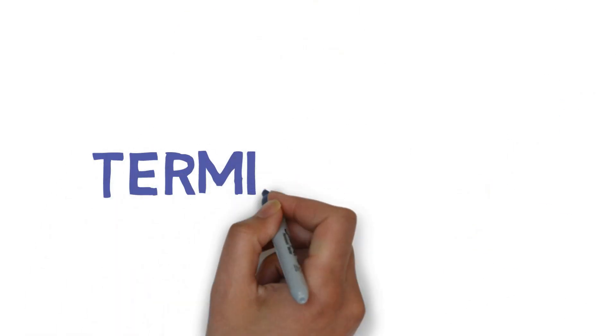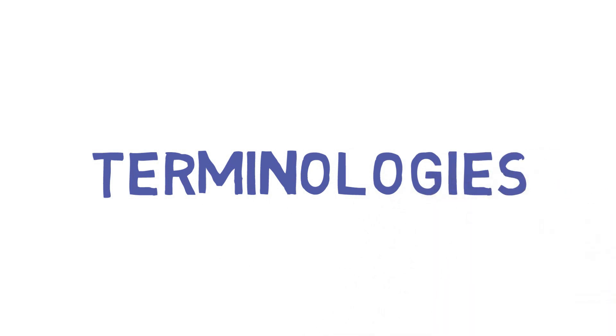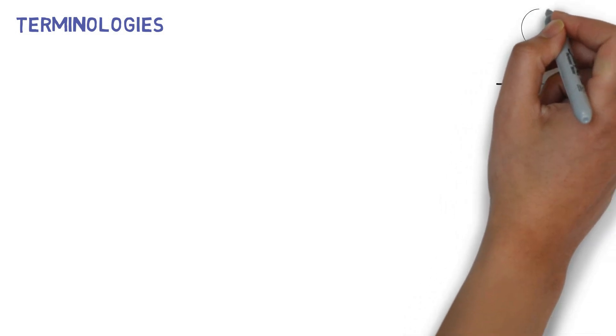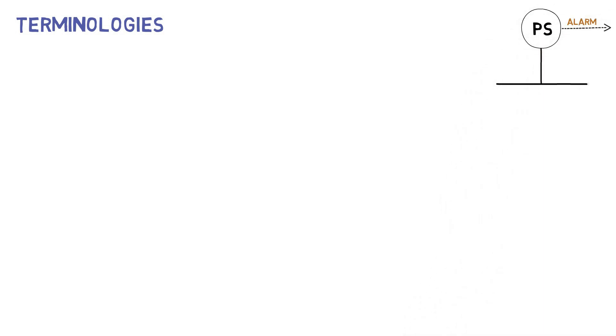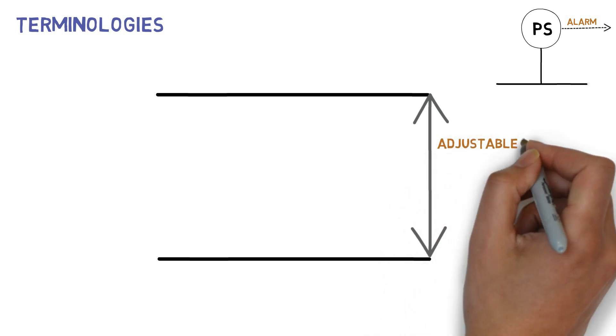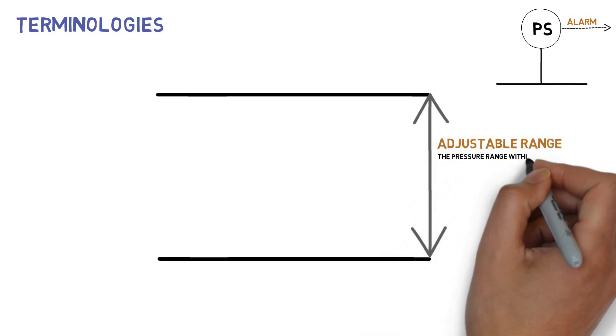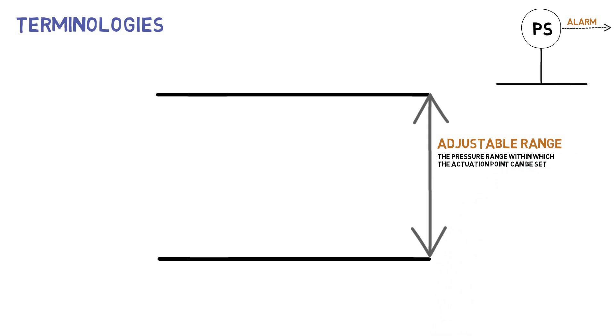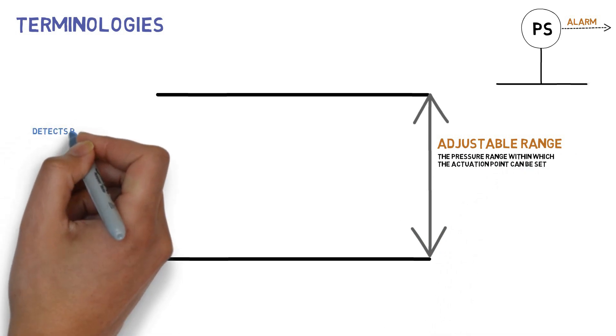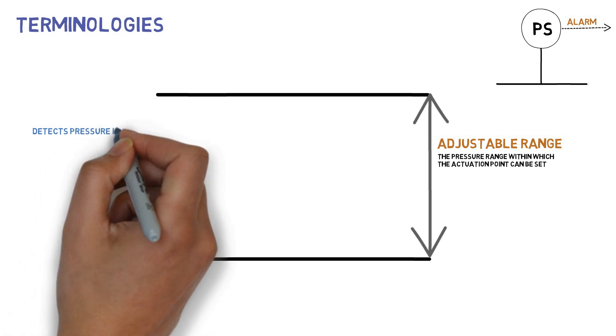Terminologies used in pressure switches: adjustable range is the pressure range within which the actuation point can be set. For example, we will see a pressure switch which detects pressure increase.